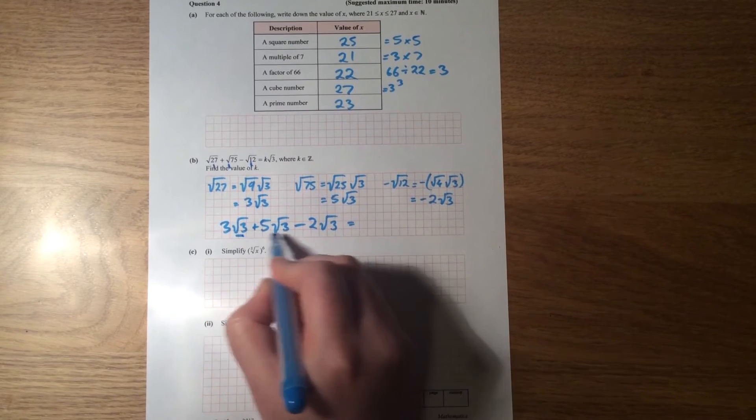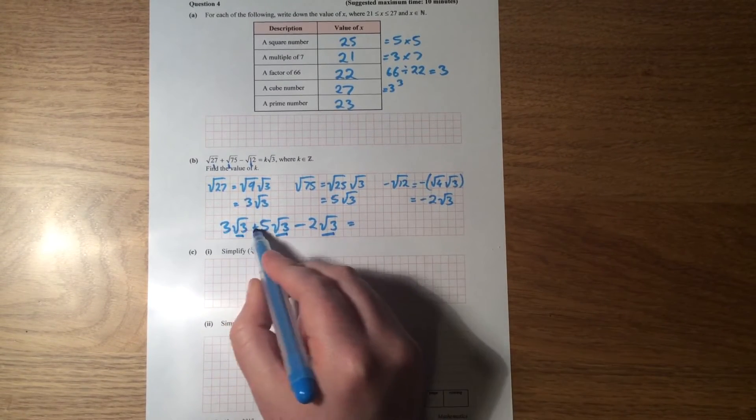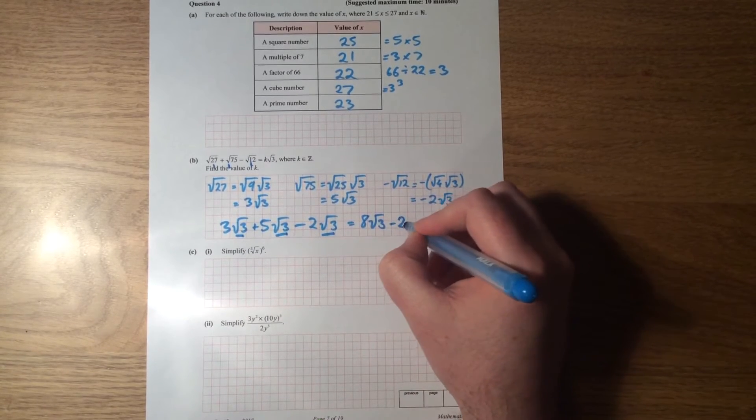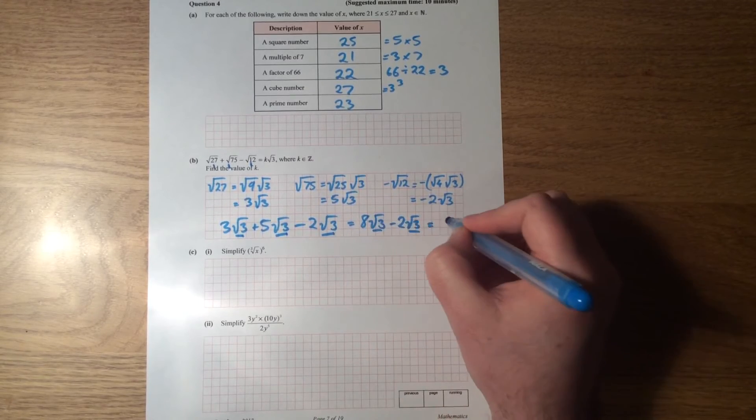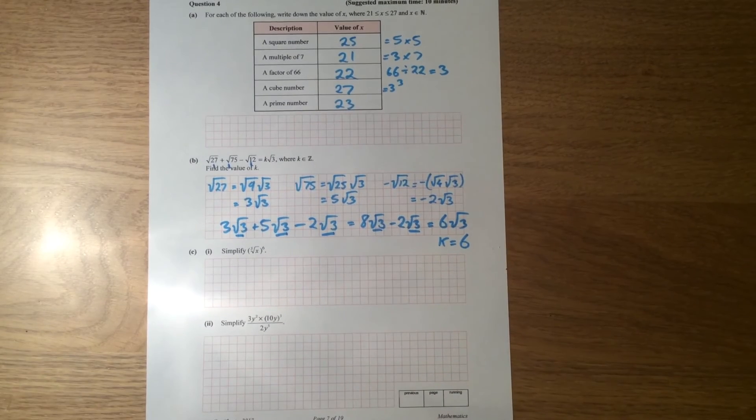And if you look at this, the terms are all the same. They're all root 3, so therefore they can actually be added together. So 3 plus 5 is 8, so I get 8 root 3 minus 2 root 3. Again, the terms are the same. 8 minus 2 is 6 root 3. K is equal to 6.